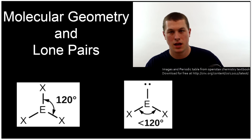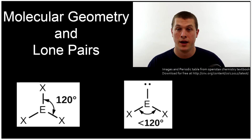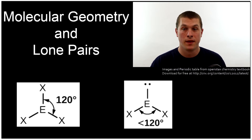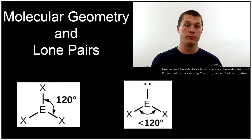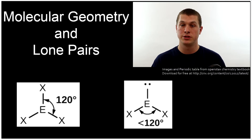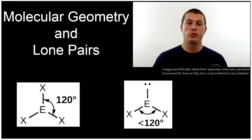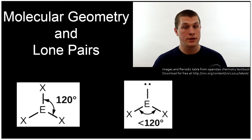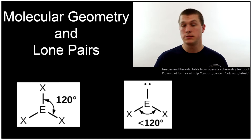Hello, welcome to yet another episode of Real Chemistry. I'm Dr. Morris and today we're going to be talking about molecular geometry and lone pairs. Molecular geometry is importantly really different from electron geometry, so if you're not familiar with electron geometry, go ahead and check out the episode linked below first. Electron geometry describes the position of our electrons around our central atom, whereas molecular geometry describes the position of our atoms.